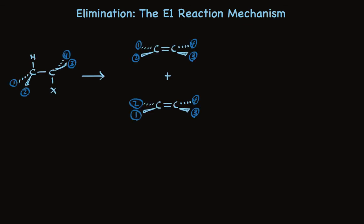In an E1 elimination reaction, the stereochemistry of the alkyl halide is immaterial. Generally, you make both alkene stereoisomers, E and Z. This is easy to explain when you look carefully at the mechanism.